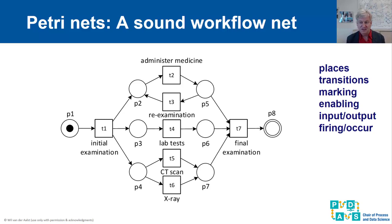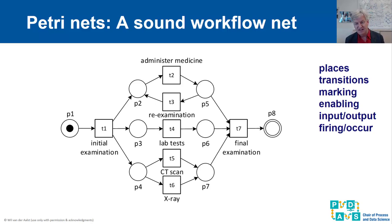A Petri net is composed of places and transitions. In the places there can be tokens, and the marking is a distribution of tokens over the various places. Here we are in the marking with one token in P1. We want to reach the final marking with one token in P8. Transitions are enabled if on each of the input places there is at least one token. A transition fires by consuming one token from all input places and producing one token for all output places.